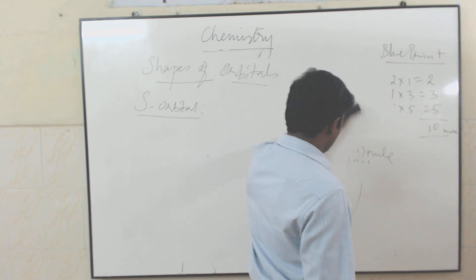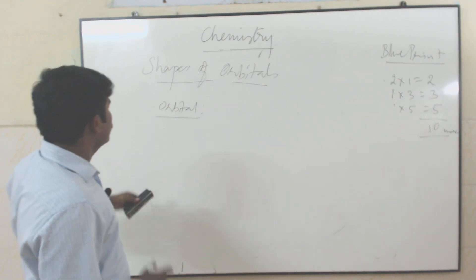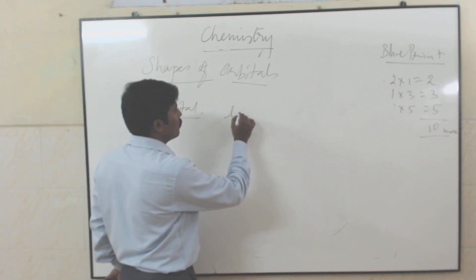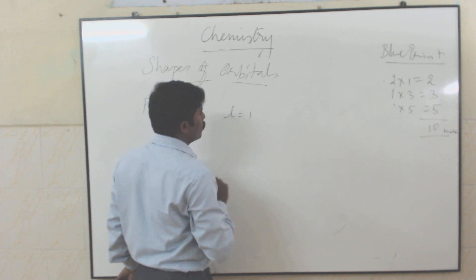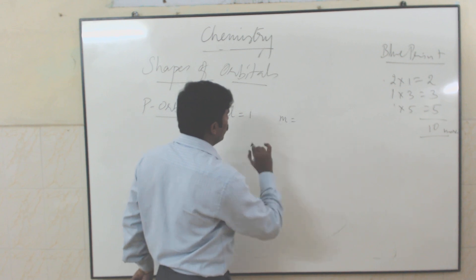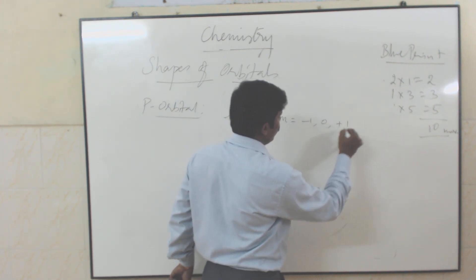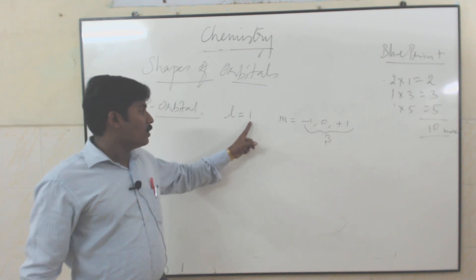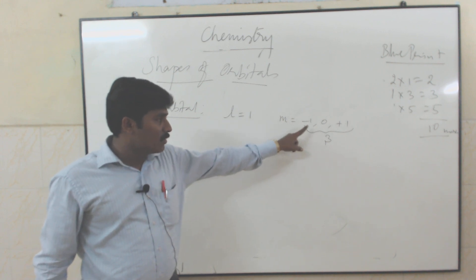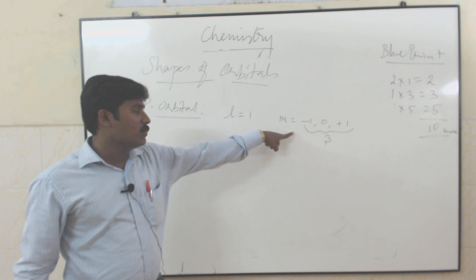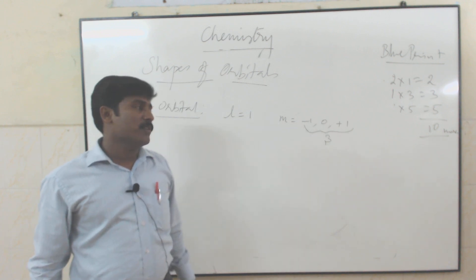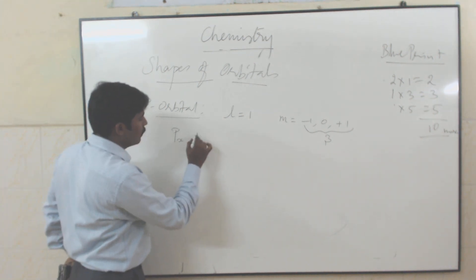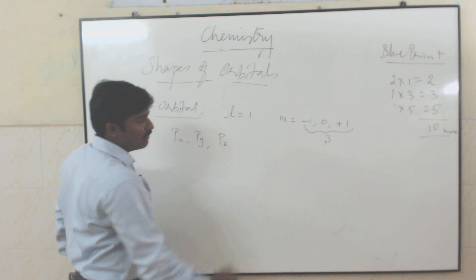P orbitals are dumbbell in shape. For p orbital, l value is equal to 1. The magnetic quantum number m starts from minus 1 through 0 to plus 1 — all together 3 orientations possible. So the 3 orientations are px, py, and pz.